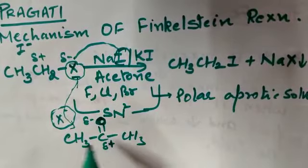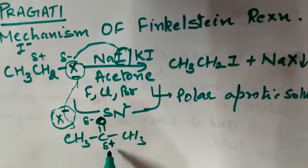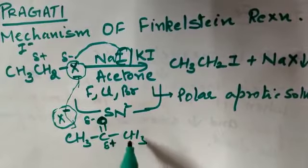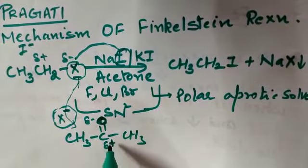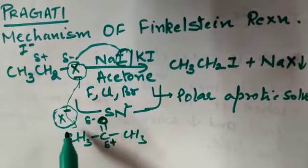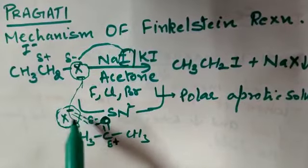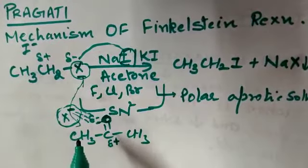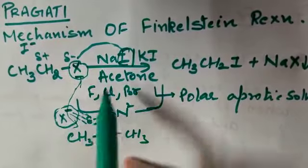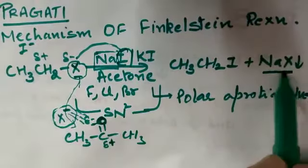Aur is repulsion ki wajah se, matlab yahan pe positive charge bhi hai, dekha jaye toh, this X negative will be attracted to this positive charge. But this is very much crowded and it is not approachable for this halide ion, X minus leaving group. So basically this acetone negative charge will repel this X minus. Now what will happen, this X minus will be attracted by this sodium part. So this will make NaX.